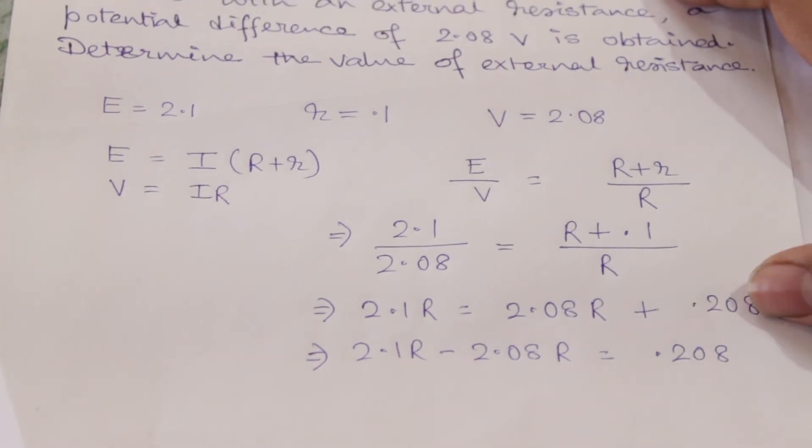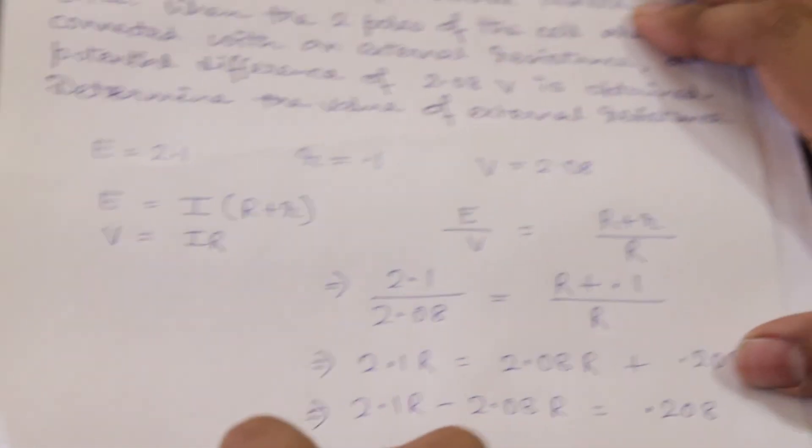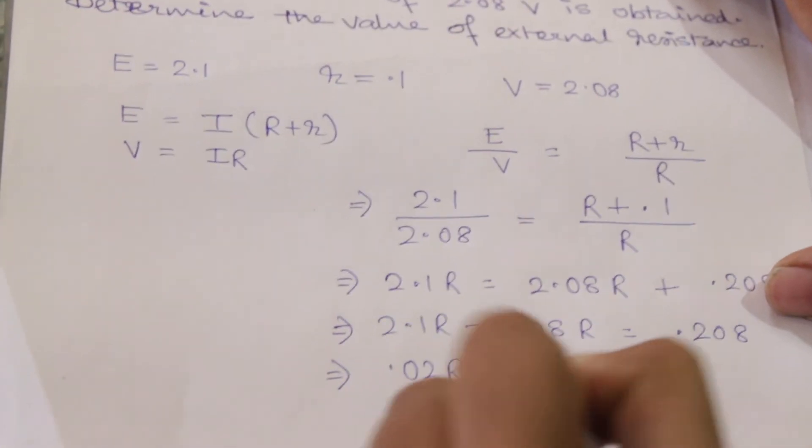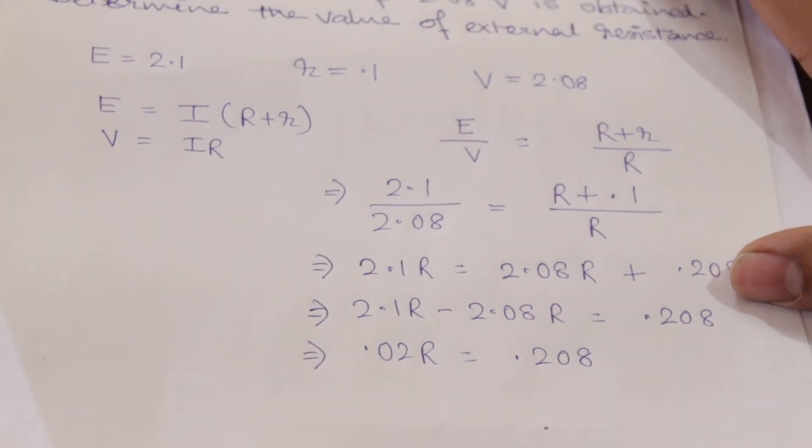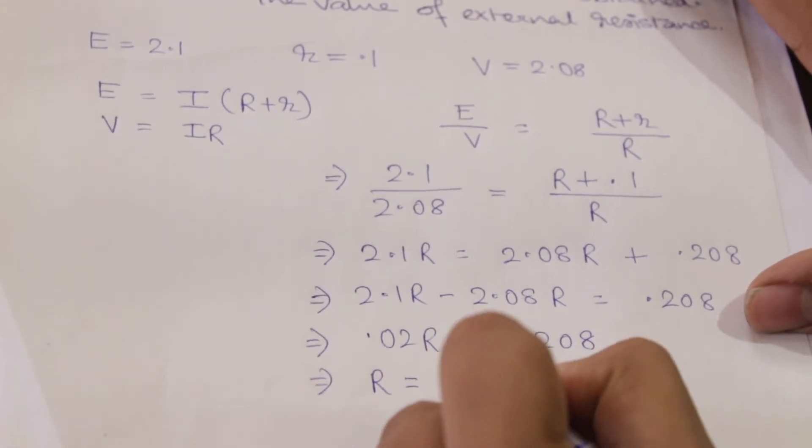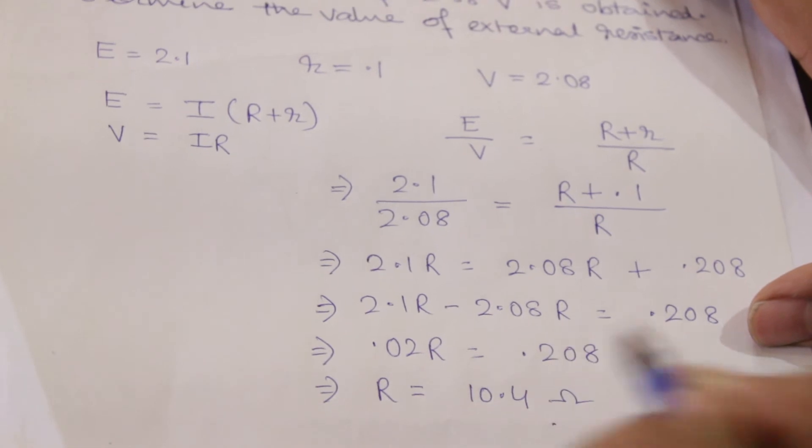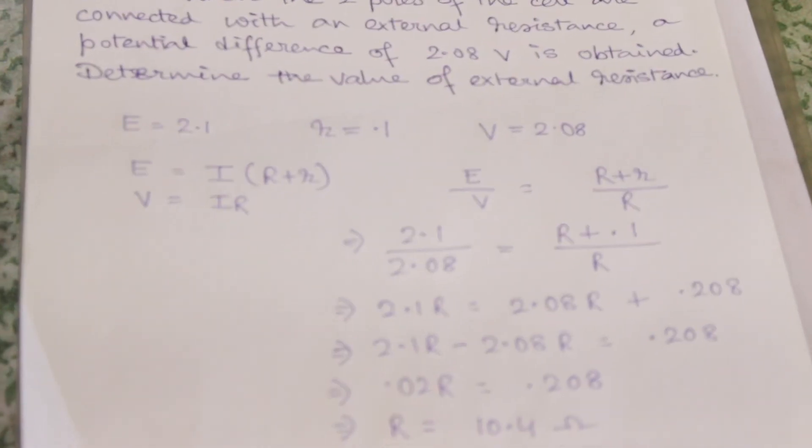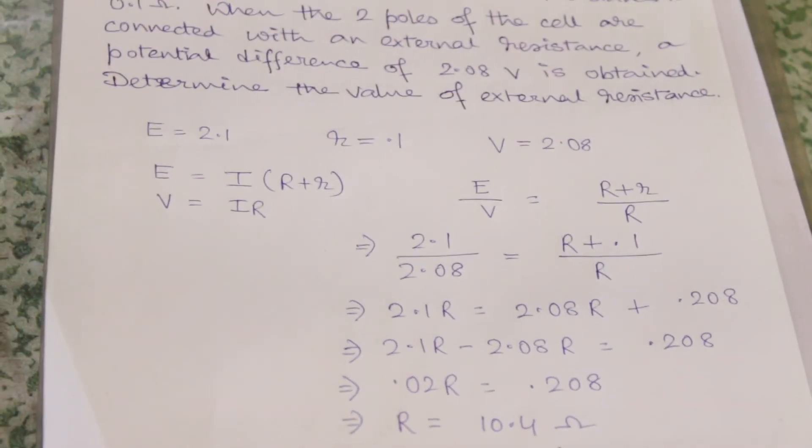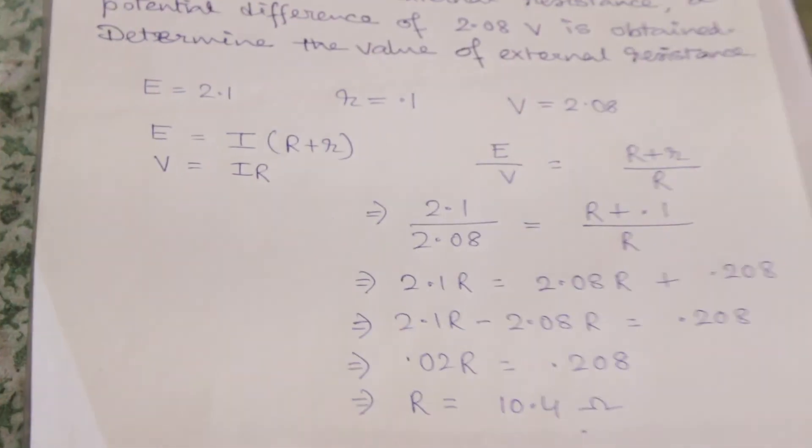If we cross multiply them, it will be like this. This will be equal to this, so 0.02R will be equal to this. So R will be equal to 10.4 ohms. So this is how we can calculate the external resistance when E and V is given along with internal resistance.